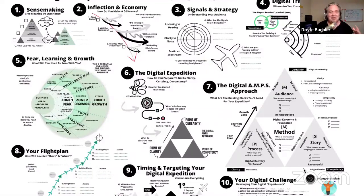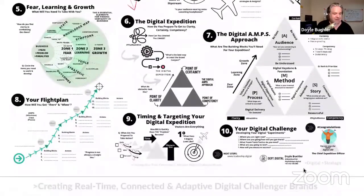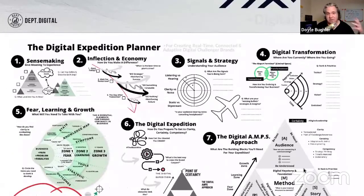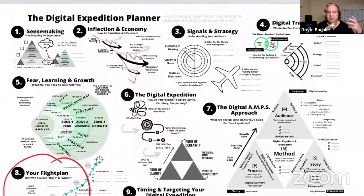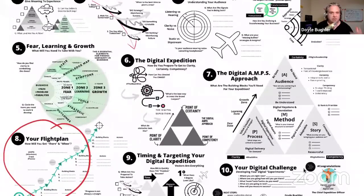I'm going to go through the 10 base camps that show you how to develop that plan. Step number eight is where we actually build what I call your flight plan, put together from all the different steps along the way: sense-making, inflection in economy, signals and strategy, digital transformation, fear, learning, growth, defining the digital expedition, and delivering it through what I call the digital AMPS approach — Audience, Method, Process, and Story. That's where you build your flight plan.